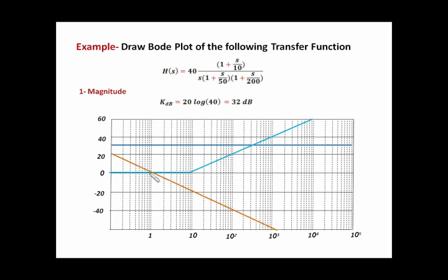Now we come to the pole at the origin. The pole at the origin passes through 0 dB at frequency 1 radian per second and has a slope of minus 20 dB per decade. Then the next pole has a corner frequency at 50 — it is a pole, so it goes with minus 20 dB per decade thereafter.